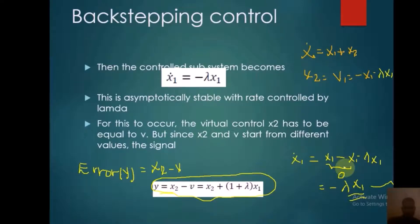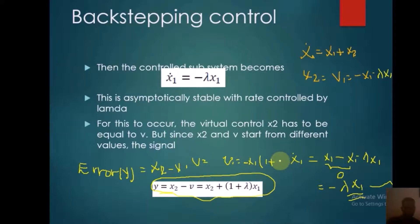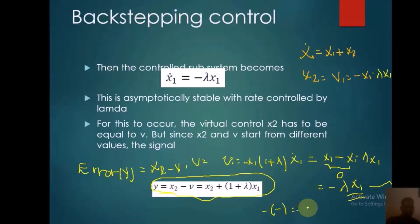Here x2 is as it is, and v equals minus lambda x1. Substituting and simplifying, v is equivalent to x1 times (1 + lambda). We substitute the value of v, and since minus of minus is plus, we get y = x2 + (1 + lambda) x1.